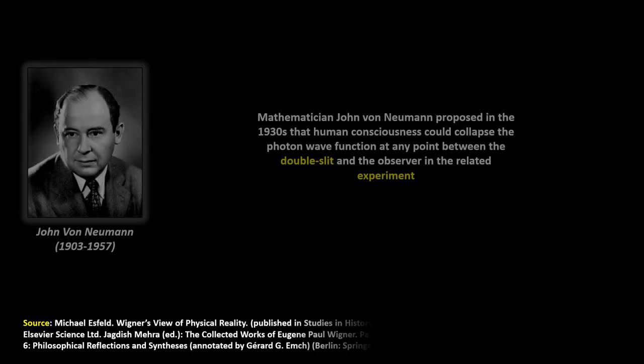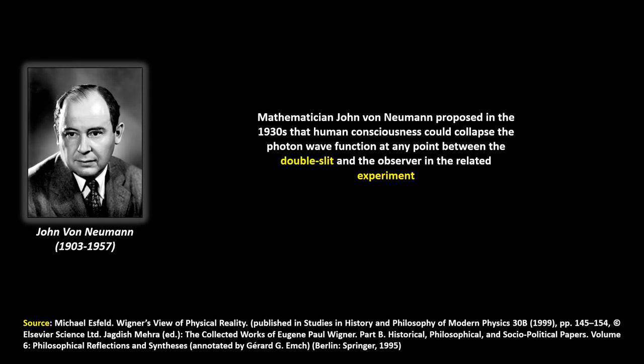Mathematician John von Neumann proposed in the 1930s that human consciousness could collapse the photon wave function at any point between the double-slit and the observer in the related experiment.